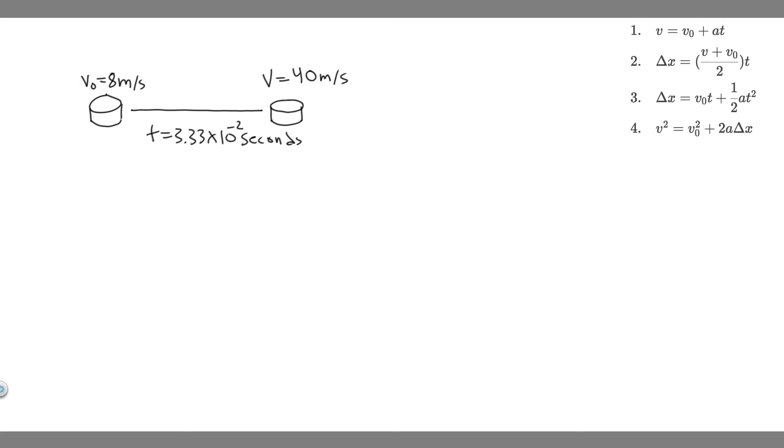The first thing you always want to do is draw what's going on. So we have this puck, and the initial velocity is 8 meters per second. It's traveling this way, and then the hockey player is going to hit it for 3.33 times 10 to the minus 2 seconds, and it's going to reach a speed of 40 meters per second. What we're trying to do is find the distance that it travels over this time, so we're trying to find delta x.